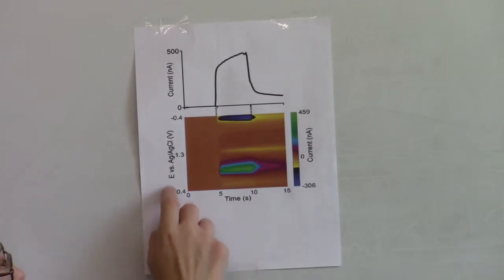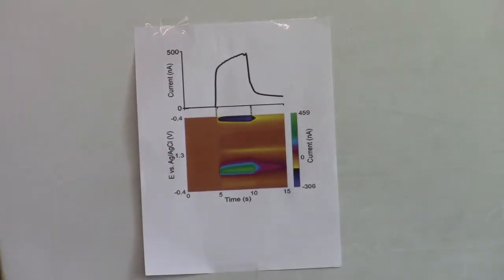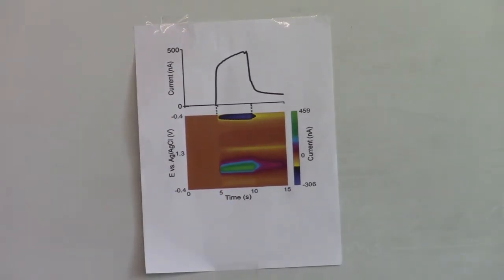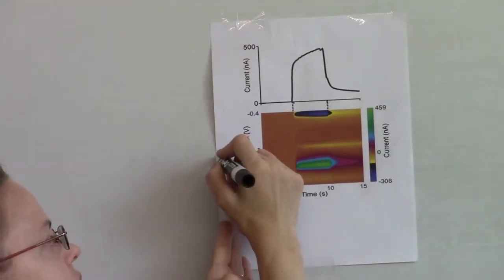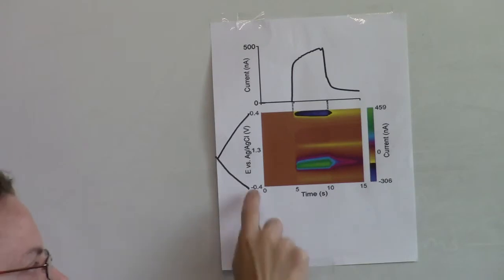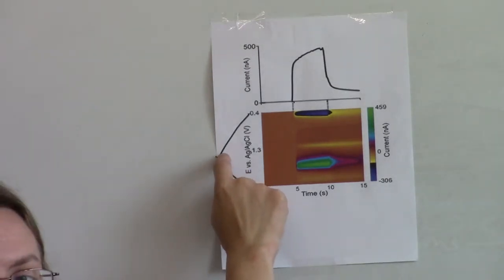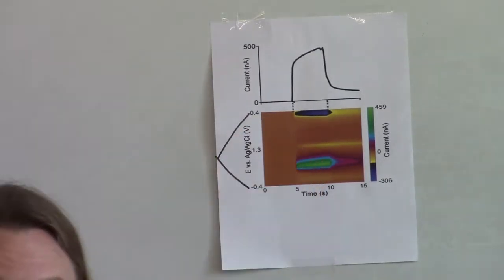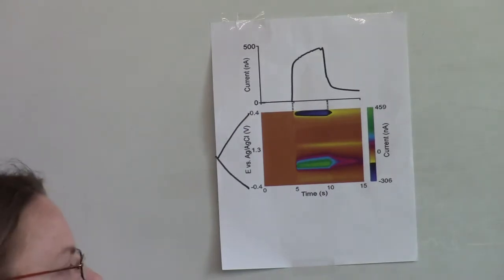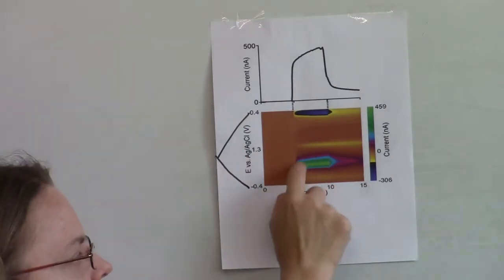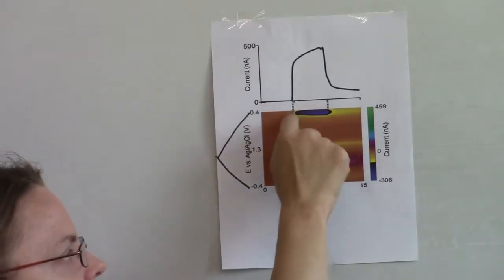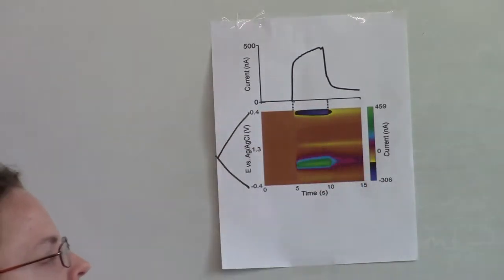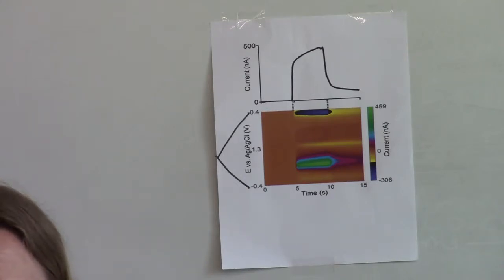So on the y-axis of the color plot we put our voltage that we're scanning and I'm going to draw on this, like this would be the upward scan and that would be the downward scan. We start at the bottom, minus 0.4, we ramp up to the middle at 1.3 in this case and then back down. So the upward scan when we're doing, this is our dopamine oxidation then, and then we ramp back down, this is where we get reduction.